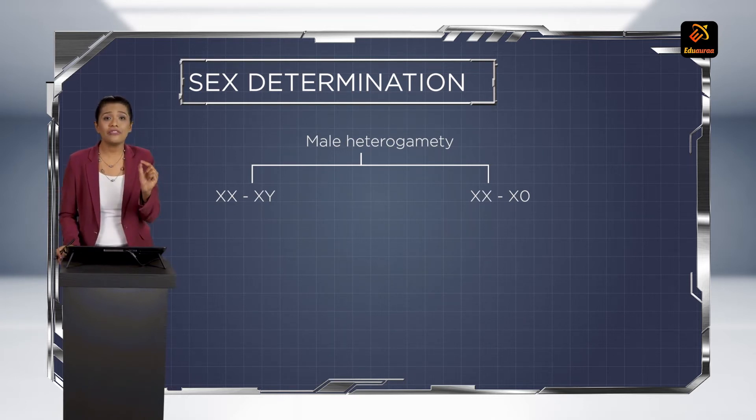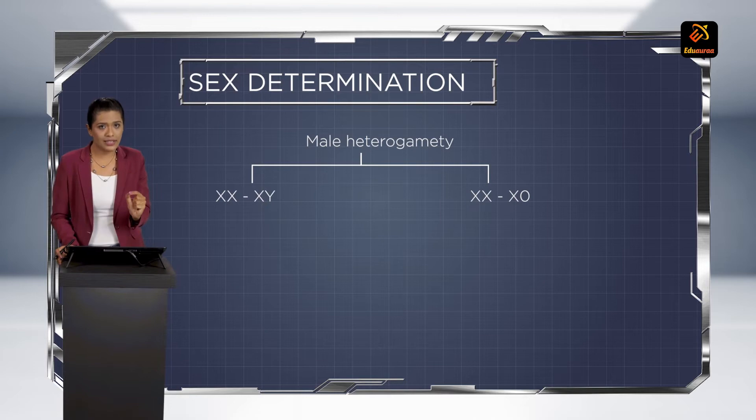All organisms following male heterogamety have female organisms with the same type of gametes, but the male organisms have different types of gametes.